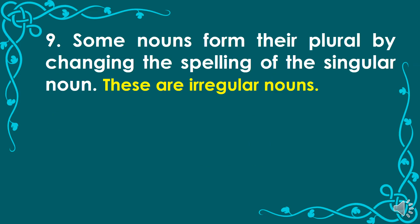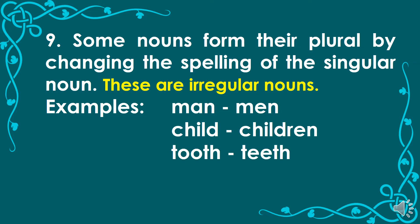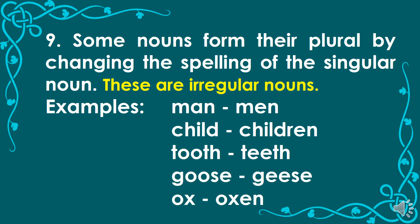Number 9: Some nouns form their plural by changing the spelling of the singular noun. These are the irregular nouns. Examples: man, men. Child, children. Tooth, teeth. Goose, geese. Ox, oxen.